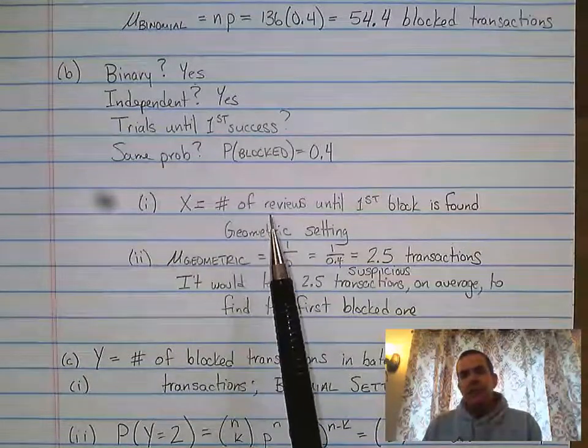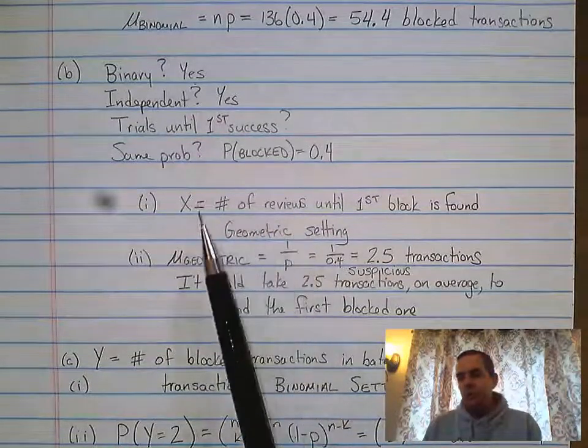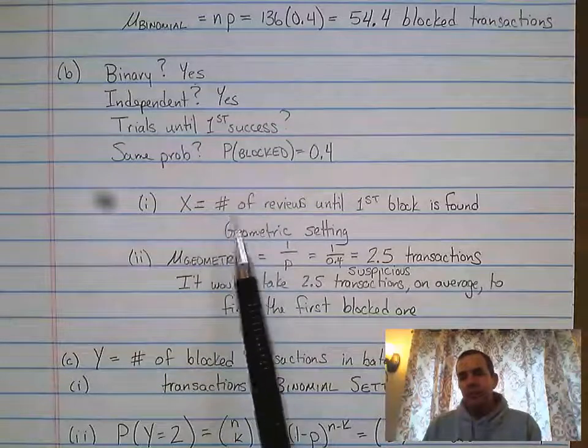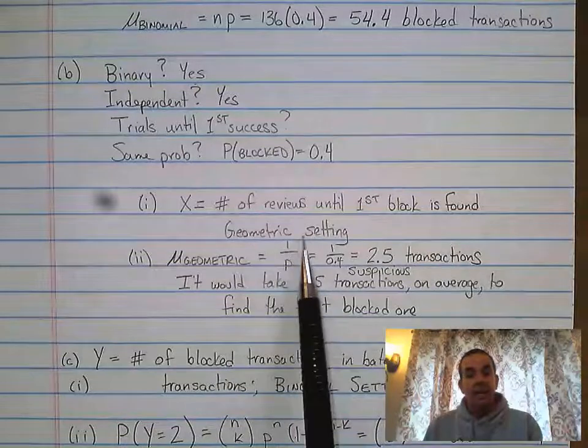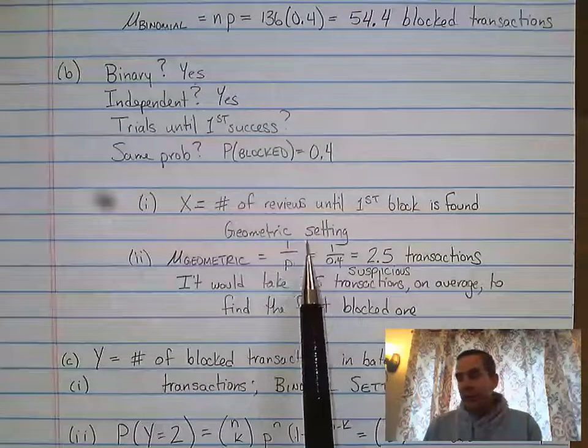So what you needed to do, and the type of distribution, so what you needed to do is come up with some variable. In this case, X equals the number of reviews until the first block is found. And in the case of here, this is a geometric setting.